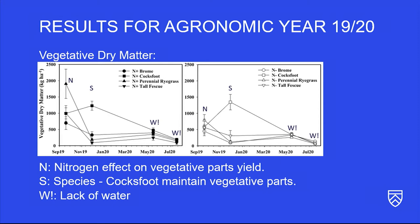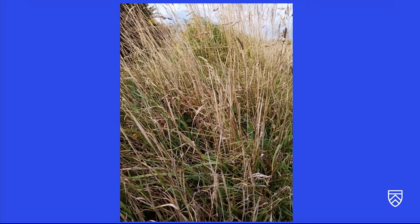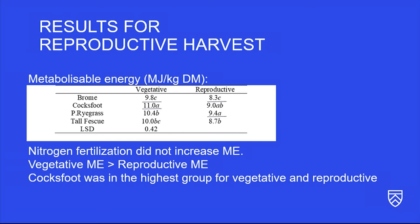When it comes to vegetative dry matter yield, we still see the nitrogen effect for the October 2019 harvest. The letter S shows a species effect — that square represents cocksfoot, which had higher vegetative dry matter. This happened because when all species went fully reproductive, cocksfoot still managed to have green leaves at its base, as shown in the image.